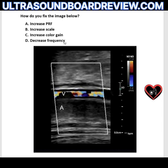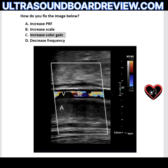With those four options, you would most likely choose option C — increase color gain — because that would put color Doppler in the artery.